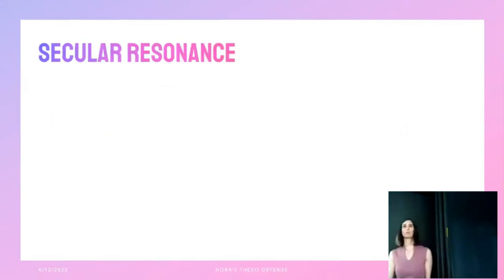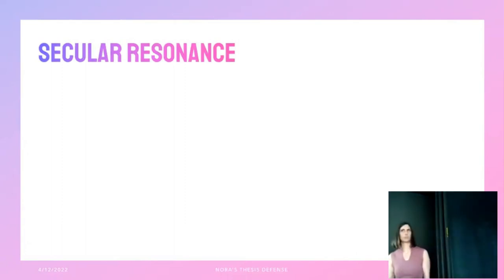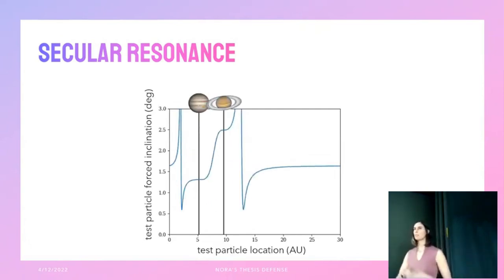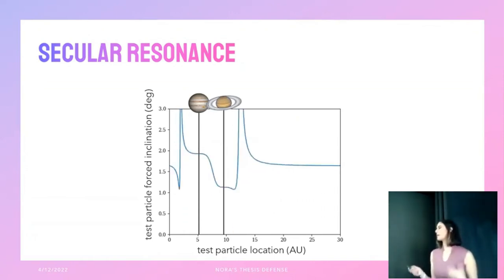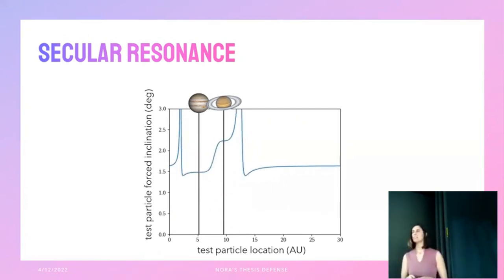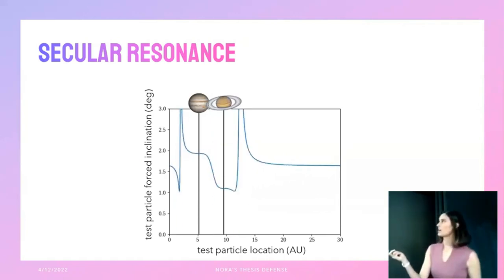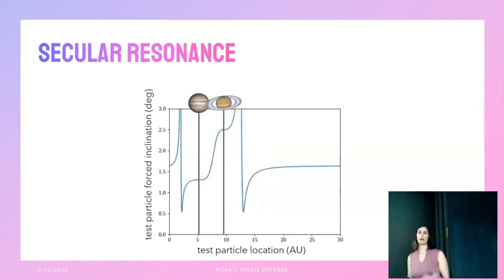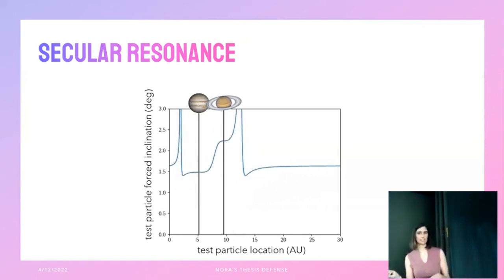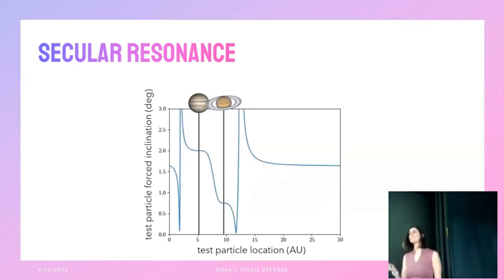Here we're talking about nodal precession frequencies among planets in a multi-planet system. You can get a secular resonance when these frequencies match one another. For a simplified solar system with just Jupiter and Saturn and a massless test particle, the particle experiences forced inclination that spikes at two locations where its nodal precession frequency matches those of the two planets. I used Laplace-Lagrange theory to calculate this — but I just told you how wrong Laplace-Lagrange can get these frequencies, meaning it can get the resonance locations very wrong.